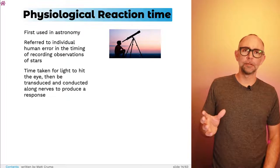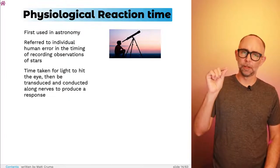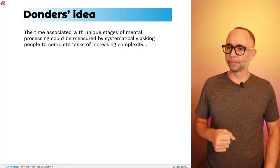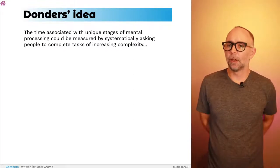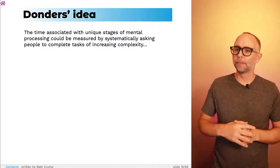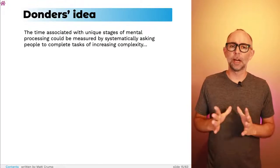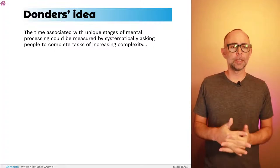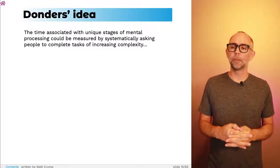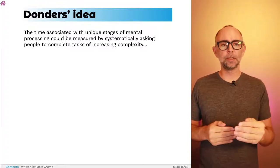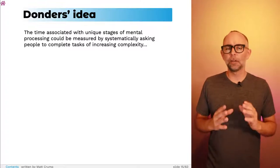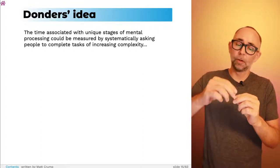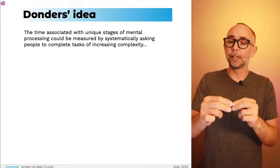So people were already trying to get precise measurements of how quickly somebody can respond to something as simple as seeing a light. Donders was working in this background and started wondering about the time associated with unique stages of mental processing. He wondered if he could measure it systematically by asking people to complete tasks of increasing complexity — simple, slightly more complicated, and even more complicated.